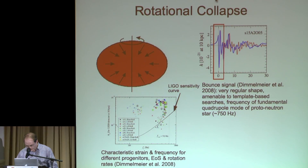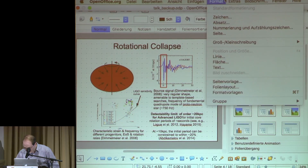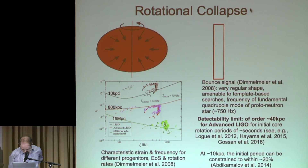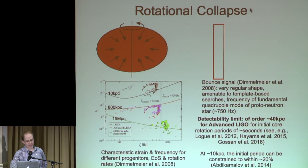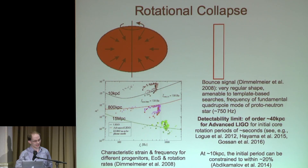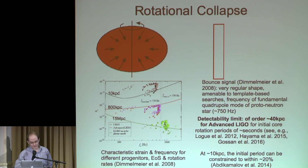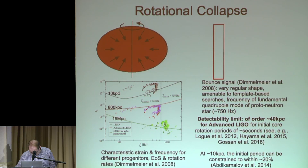In terms of detectability, making rough estimates, with advanced LIGO you can go out to something like 100 kiloparsecs. But if you do precise statistical analysis, as several groups have now done — there is a very nice recent overview in Gossen 2016 — you find that with rotational core bounce for the fastest spin rates expected in progenitors, of order seconds, you can detect those out to a few tens of kiloparsecs, but no more. So you're essentially stuck in the Milky Way.